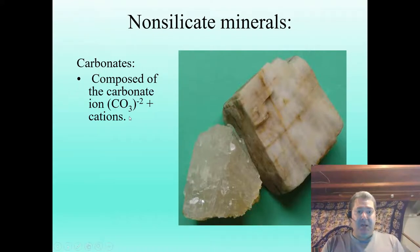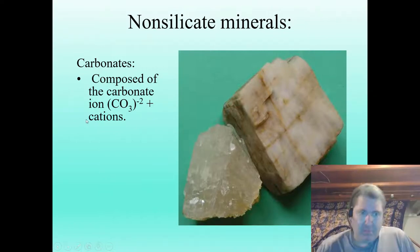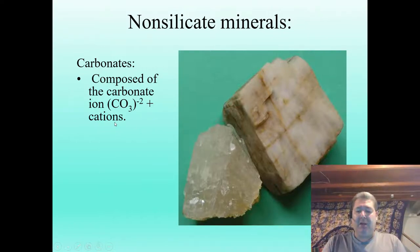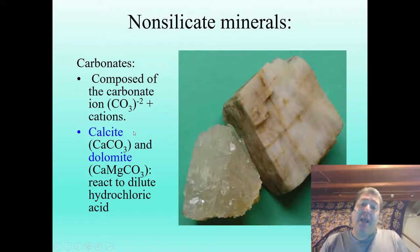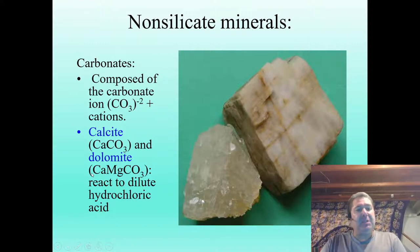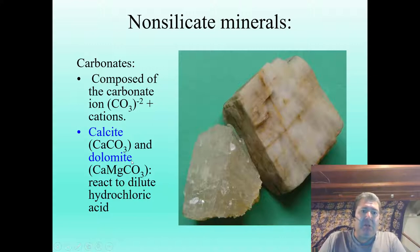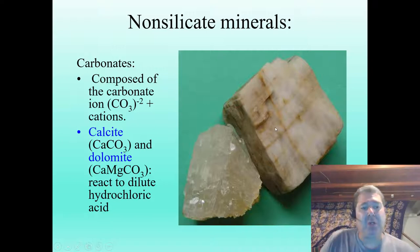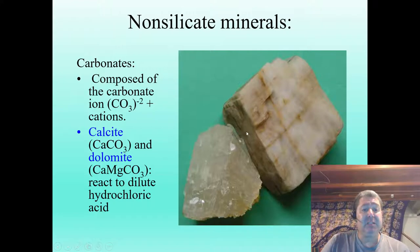The carbonate ion CO3 has a cation attached to it — calcium or magnesium are some common ones. Calcite is calcium with the carbonate ion attached, and dolomite is calcium with some magnesium in the structure as well, also with a carbonate ion. Both will react to dilute hydrochloric acid — you have calcite in your mineral specimens but not dolomite.